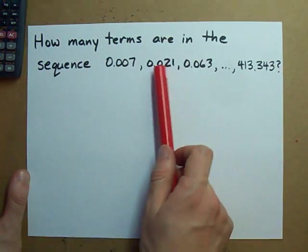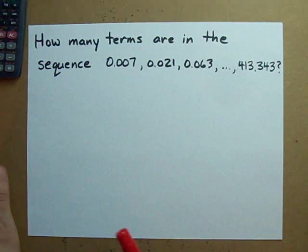when you're given the first term, first few terms actually, and the last term, you need to figure out if it's arithmetic or geometric.